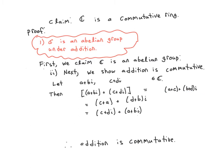We need to show it's an abelian group, so the next step is to show addition is commutative. So now we take two complex numbers and we add them, and we show that the order doesn't matter. If we add them in this order, the real part is A plus C and the imaginary part is B plus D. If we add them in the other order, the real part is C plus A and the imaginary part is D plus B. Of course, addition for real numbers is already commutative, so A plus C equals C plus A and B plus D equals D plus B. So we do have equality. Therefore, addition is commutative: for any two complex numbers, X plus Y equals Y plus X.